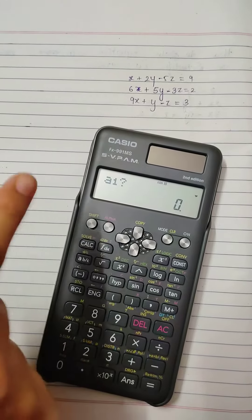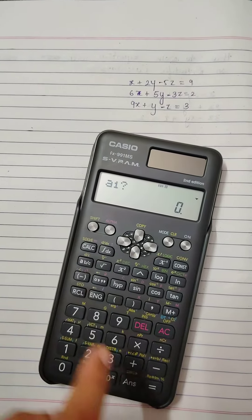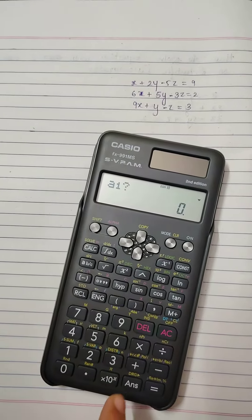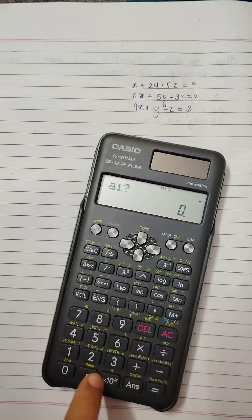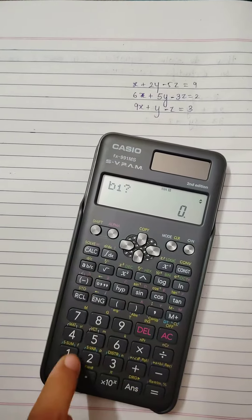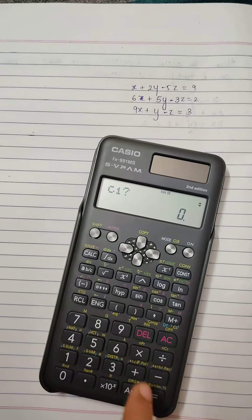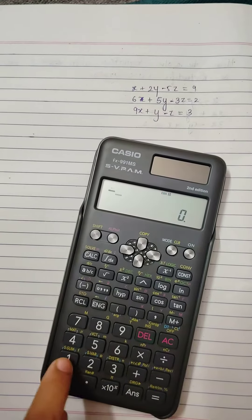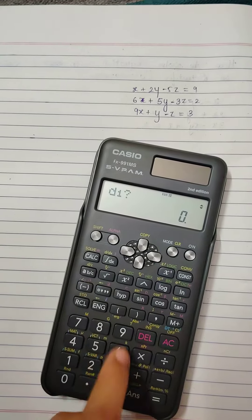So we should add the coefficients of x, y, z and the constant term. So the coefficient of x is 1, y is 2, and z is minus 5, and d1 is 9.